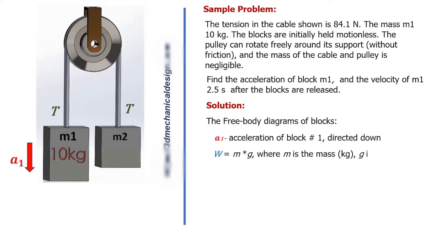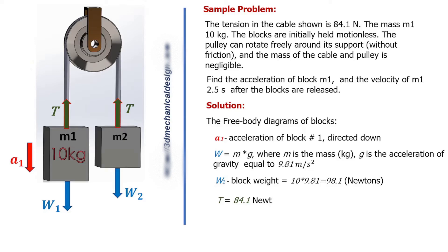Where M is the mass in kilograms, G is the acceleration of gravity equal to 9.81 meters per second squared. W1, Block Weight equals 10 times 9.81 equals 98.1 Newtons. T equals 84.1 Newtons.